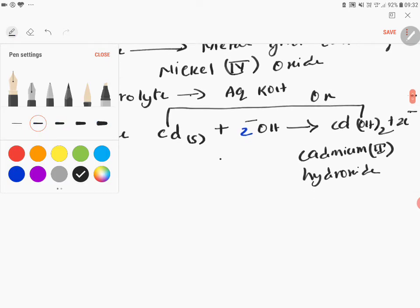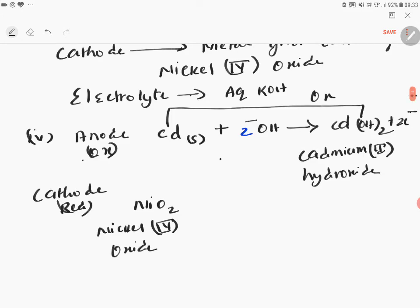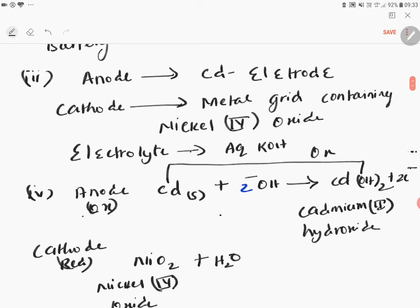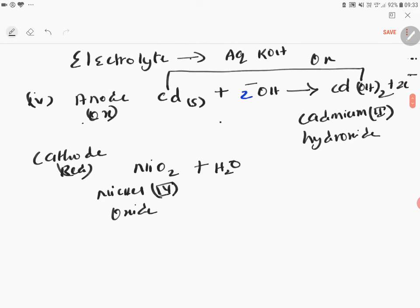Now let us go to the cathode. Reaction at cathode is reduction. Here nickel four oxide, as I already given in the previous explanation, NiO₂ is available at cathode and it is immersed in the aqueous medium. Cathode is a metal grid containing nickel four oxide. It is introduced in aqueous medium, aqueous KOH. In reduction, electrons will come on the left hand side. Here also you will get nickel hydroxide plus OH⁻ ions.